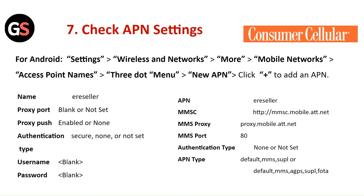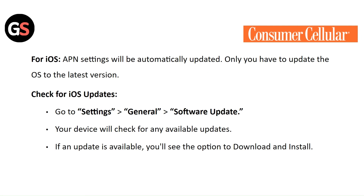Check APN settings. For Android, go to settings, then wireless and networks. Click on more, then mobile networks, and select access point name. Tap on the three dots menu, then tap on add new APN and click to add the APN. For iOS, APN settings will be automatically updated.